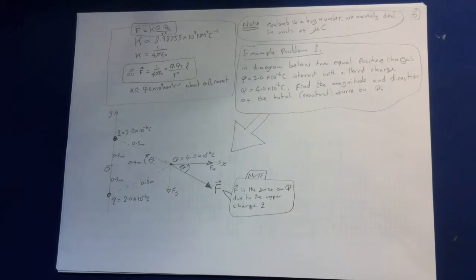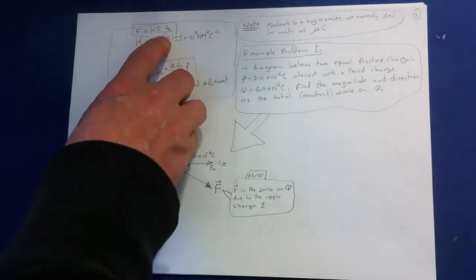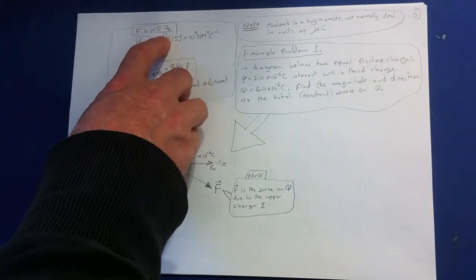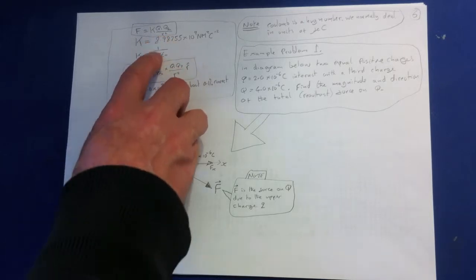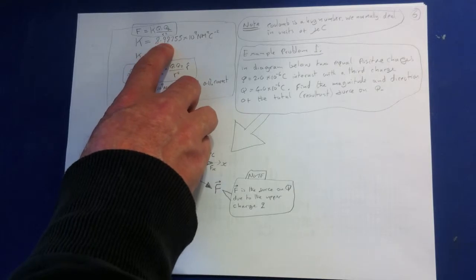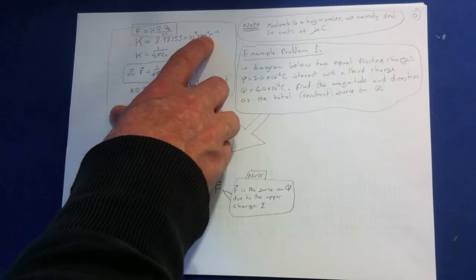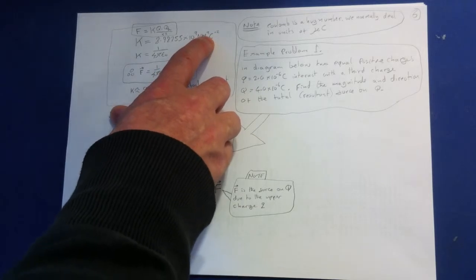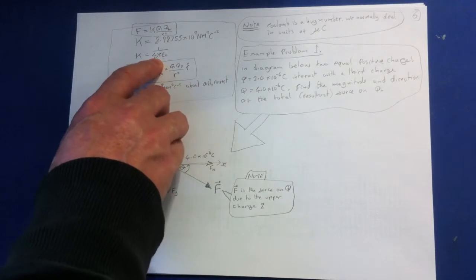The unit of electric charge. This unit was named the Coulomb and in the equation F equals K Q1 Q2 over R squared, the electric constant K is in this system K equals 8.98755 times 10 to the 9 newton metres squared per Coulomb squared.